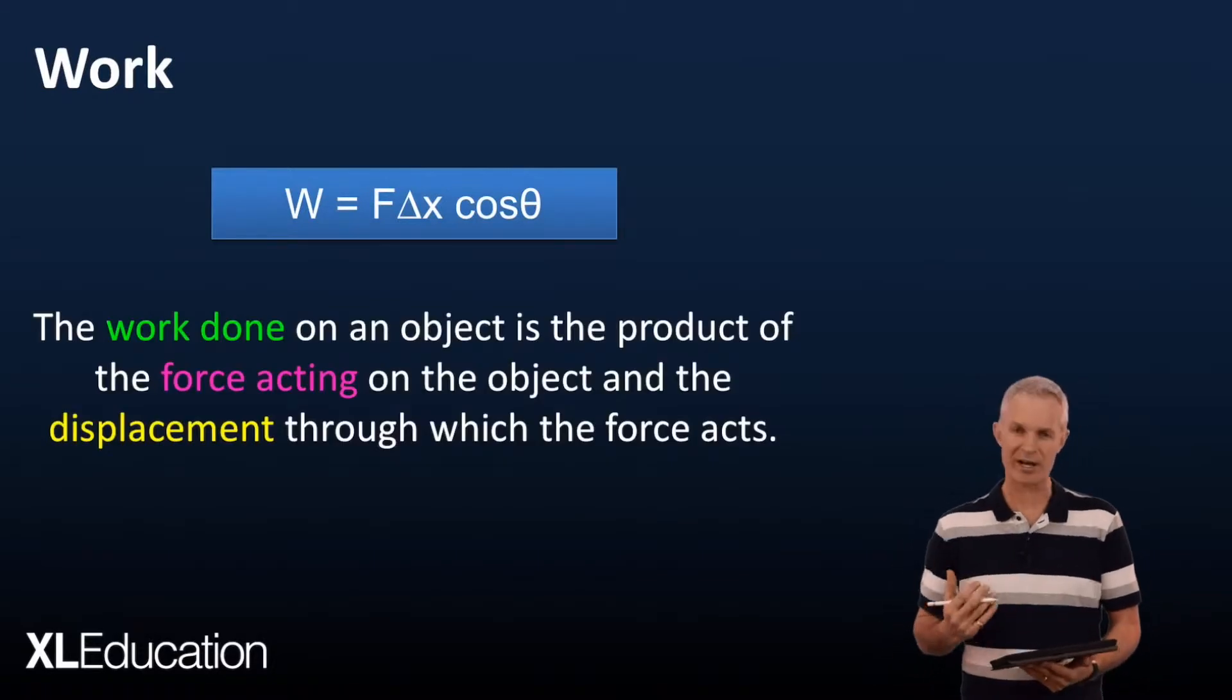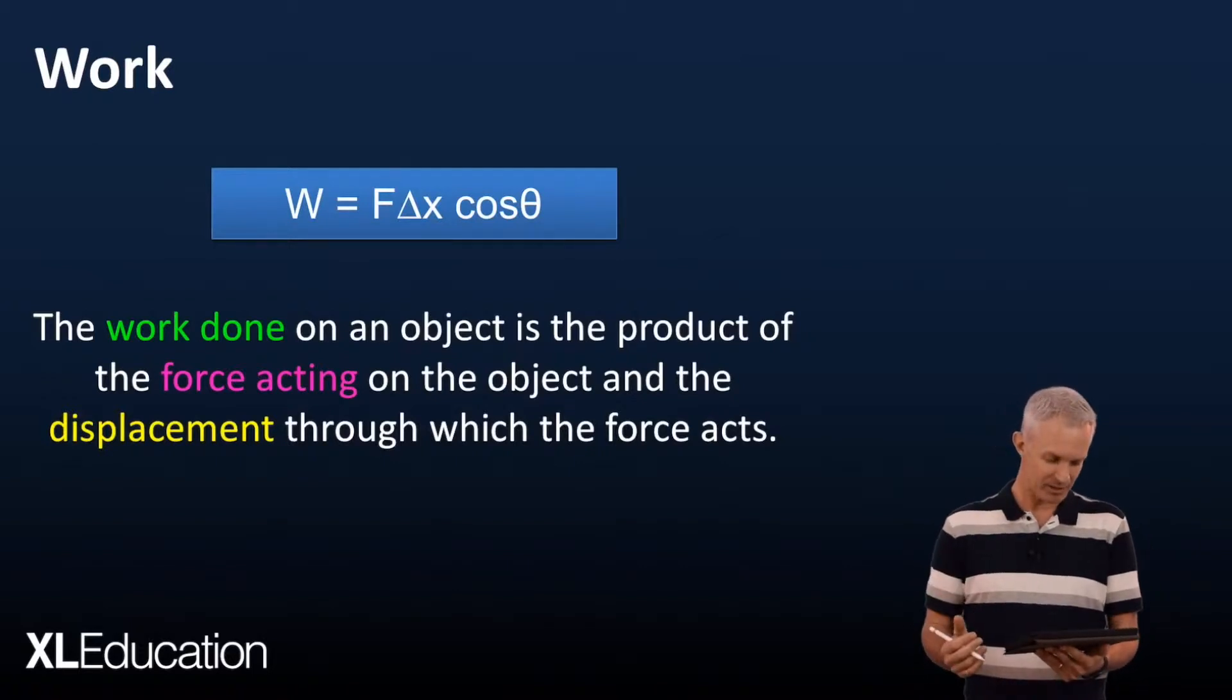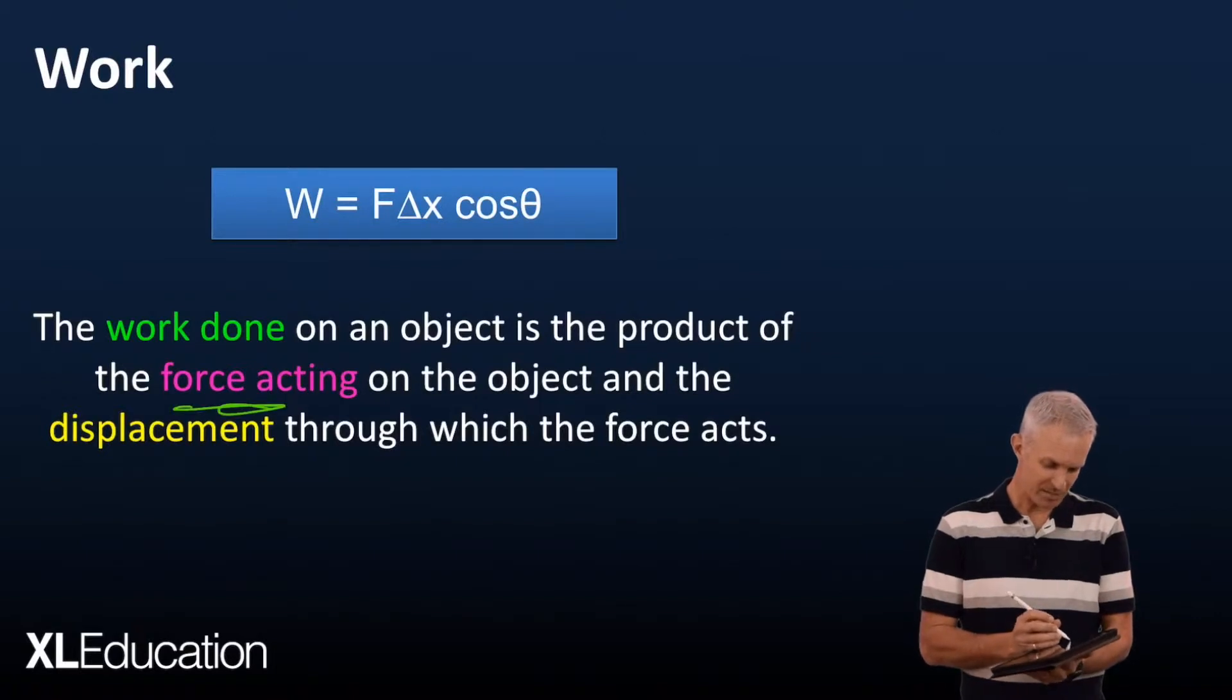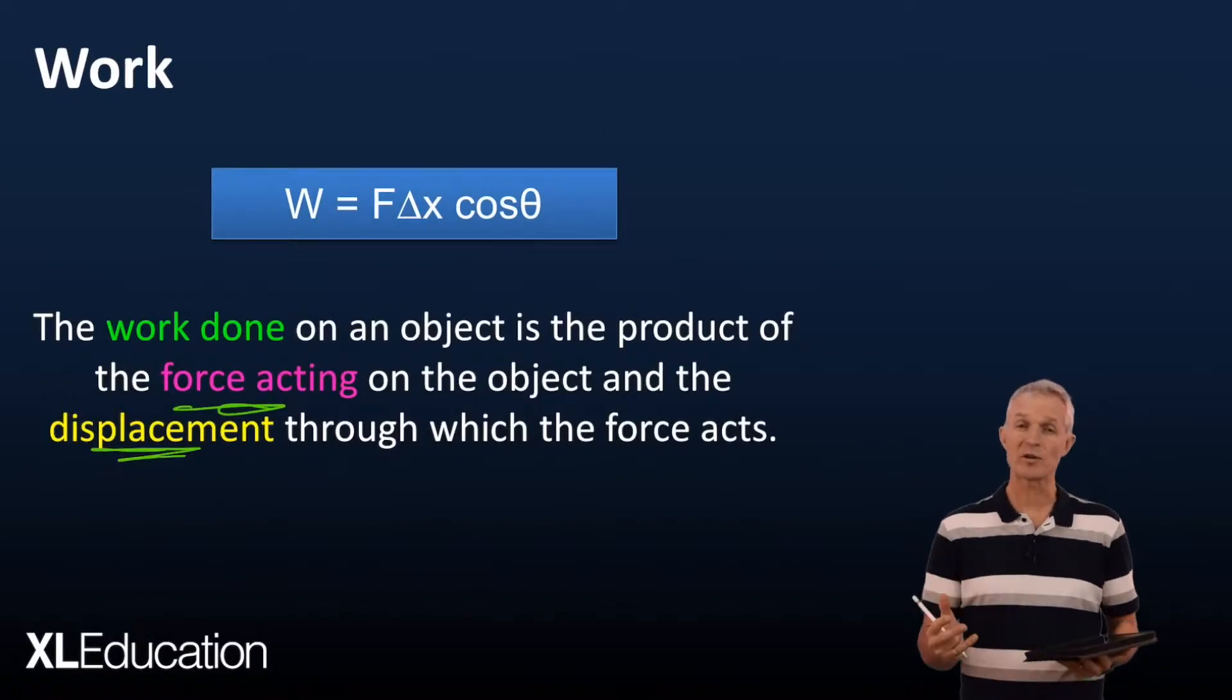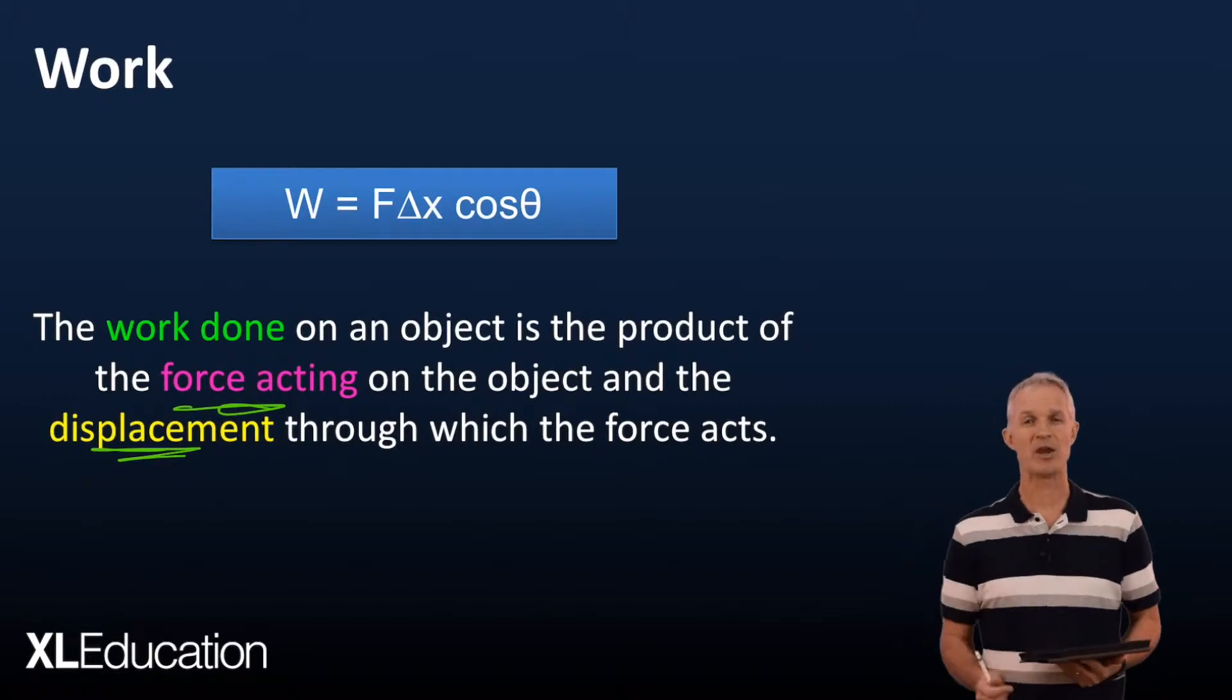These are the words that you'd write if you're asked to define work: The work done on an object is the product of the force acting on the object and the displacement through which the force acts. So those are the two ingredients—the force acting and the displacement. We've got to have both of them. If one of them is zero, the whole thing is zero and no work is done.